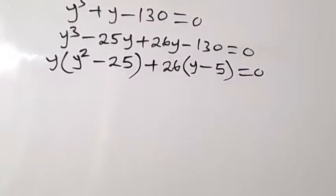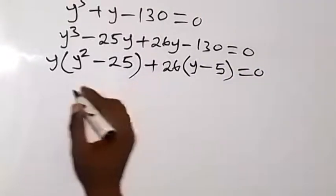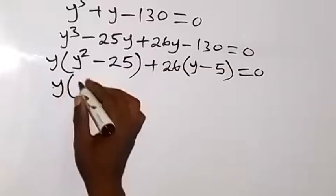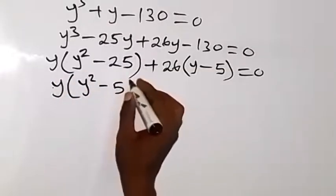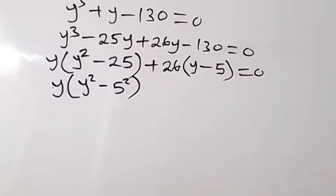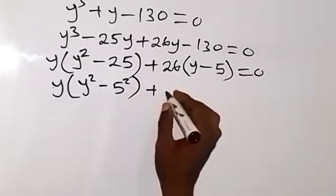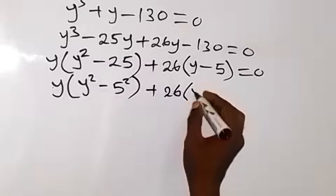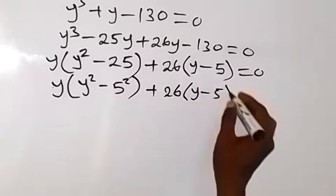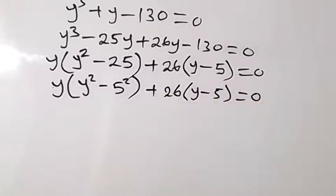So from there, we can rewrite this one as y into bracket y squared then minus 5 squared. 25 can be written as 5 squared. Then plus 26 into bracket y minus 5, then equals to 0.